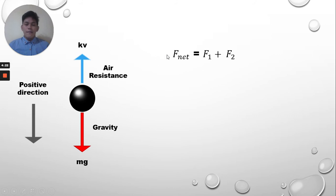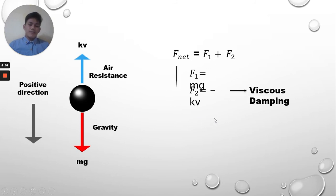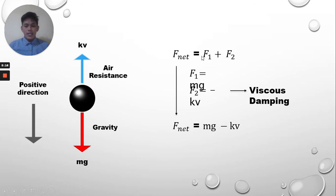To compute the net force of the object, we have Force 1 plus Force 2. The two forces acting on the object are gravity and air resistance. Force 1 is equal to mass times gravity. Force 2 is equal to negative KV — it is negative because it acts in the opposite direction of the object's movement. K is the constant of proportionality, also called viscous damping. So the net force equals mass times gravity minus KV.